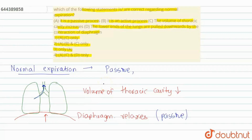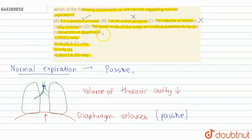The volume of the thoracic cavity is decreasing. Now evaluating the statements: Statement A — it is a passive process — correct. Statement B — it is an active process — wrong. Statement C — the volume of thoracic cavity increases — wrong, it decreases. Statement D — the lower end of the lungs are pulled downwards by contraction of the diaphragm — this happens in inspiration, not expiration. So B, C, and D are incorrect; only A is correct. Therefore, option 3 is the correct answer.